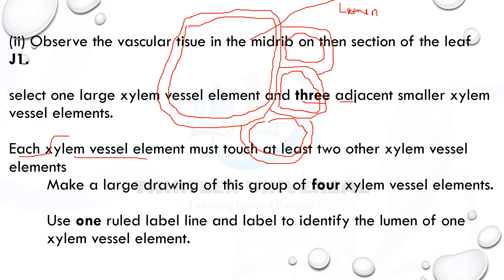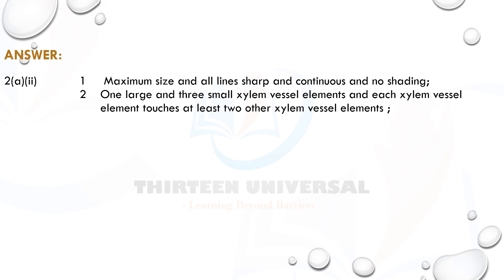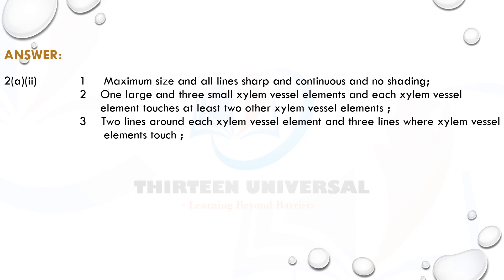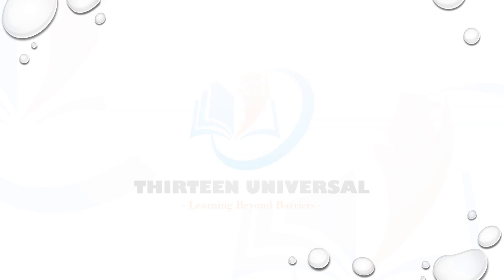The mark scheme says: maximum size, all lines sharp and continuous, no shading. One large and three small xylem vessel elements, each touching at least two others. Two lines around each element and three lines where xylem vessel elements touch - showing the boundary. Correct shape based on what you see. A label line and label to the lumen of one xylem vessel element. That's five marks - you have to follow all these rules.